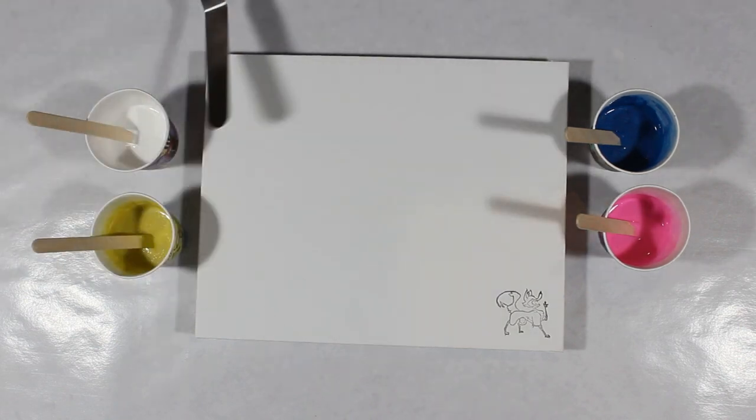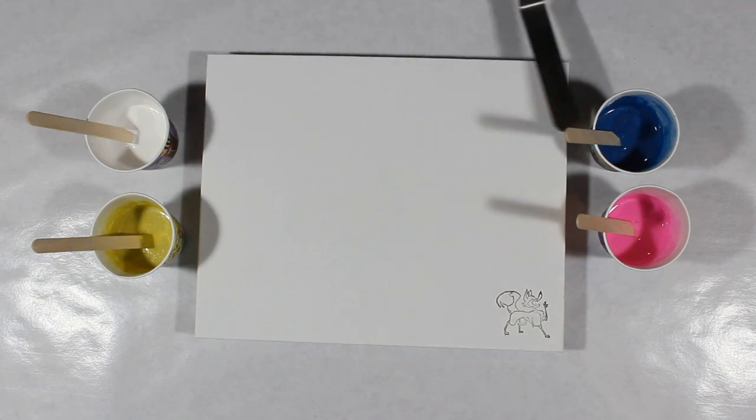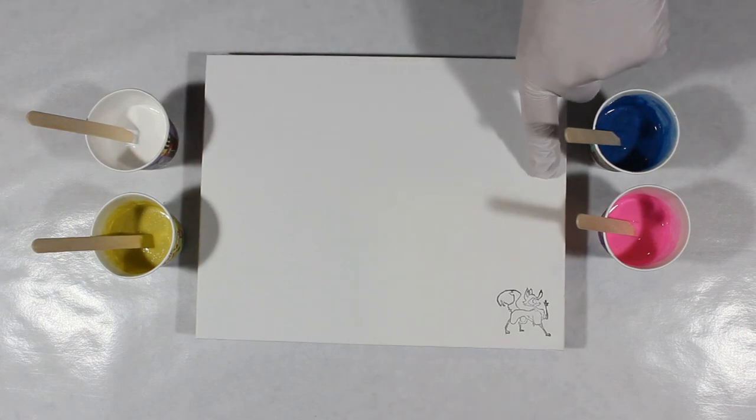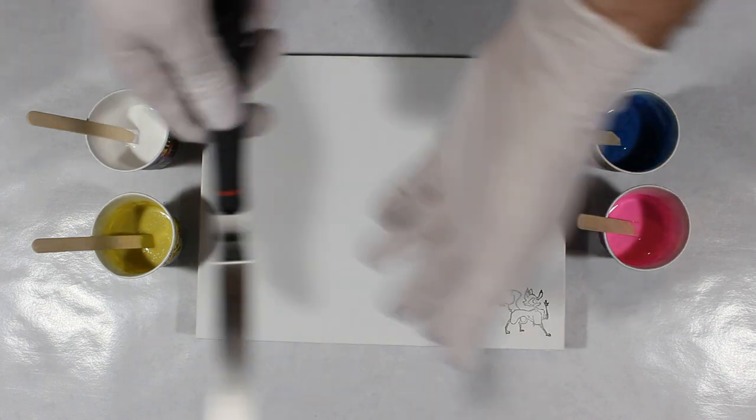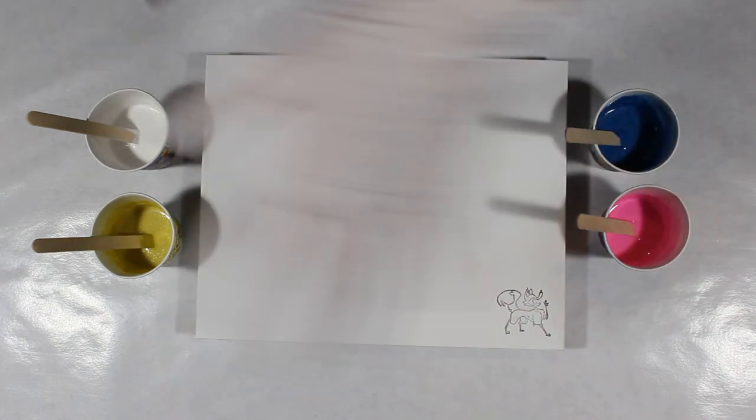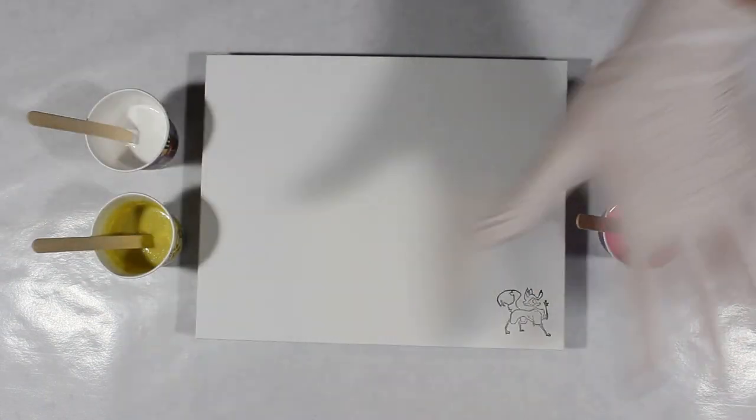The goal here is going to be to add white paint to the top of the canvas, maybe one-quarter of the canvas, covering white paint, and leave that as a negative space on the canvas. The rest of it will be covered with a dirty pour combining these four colors.